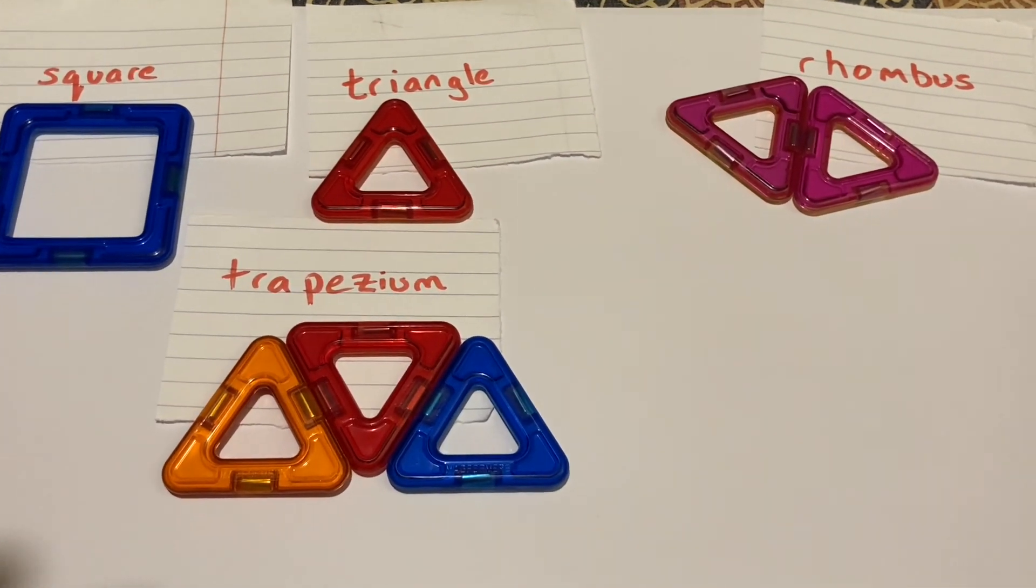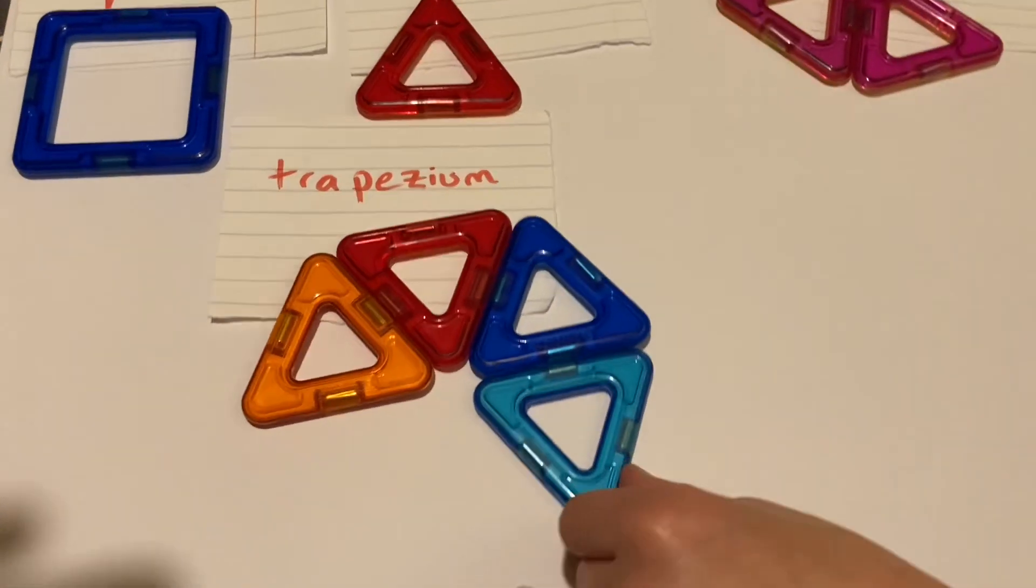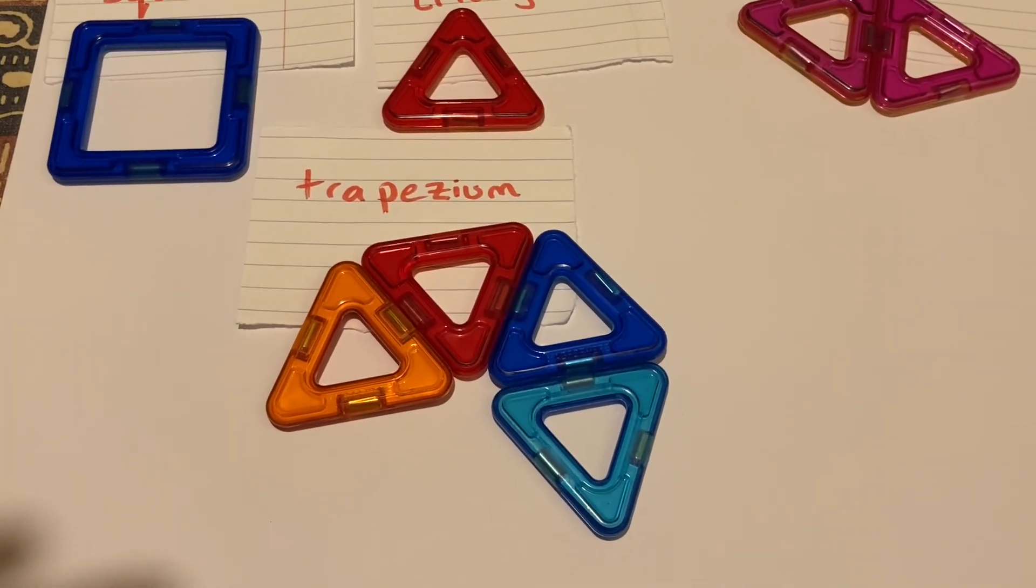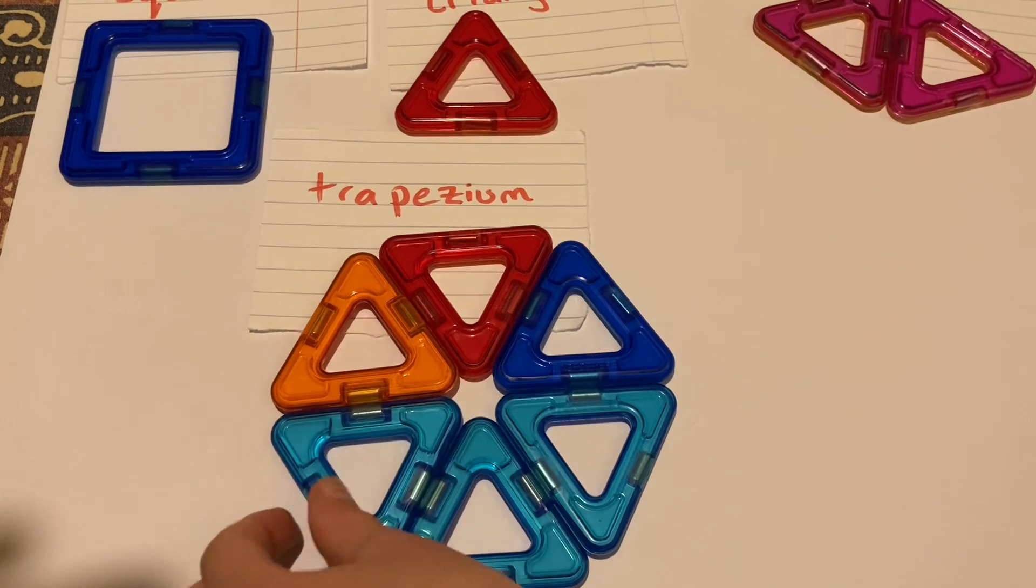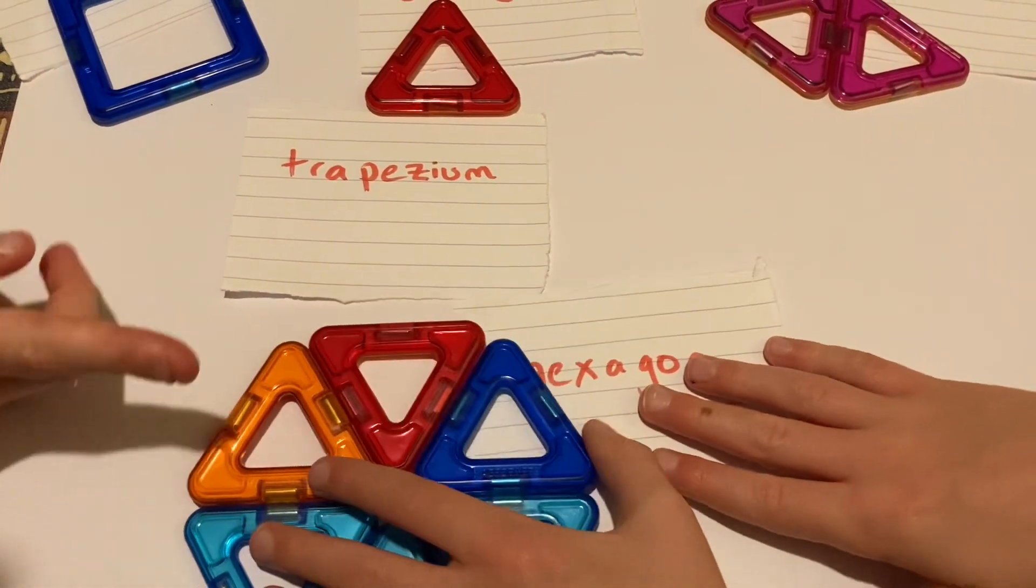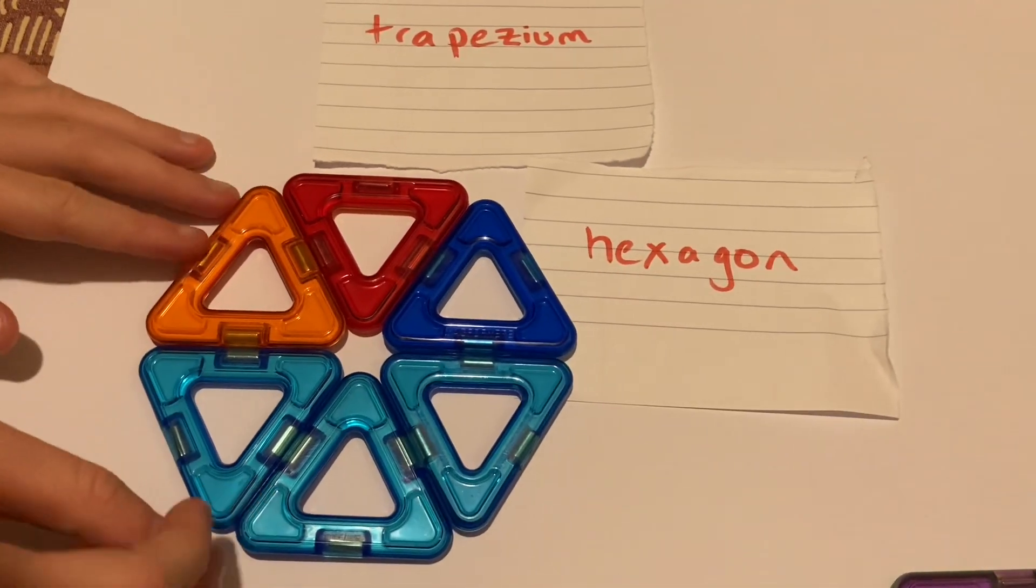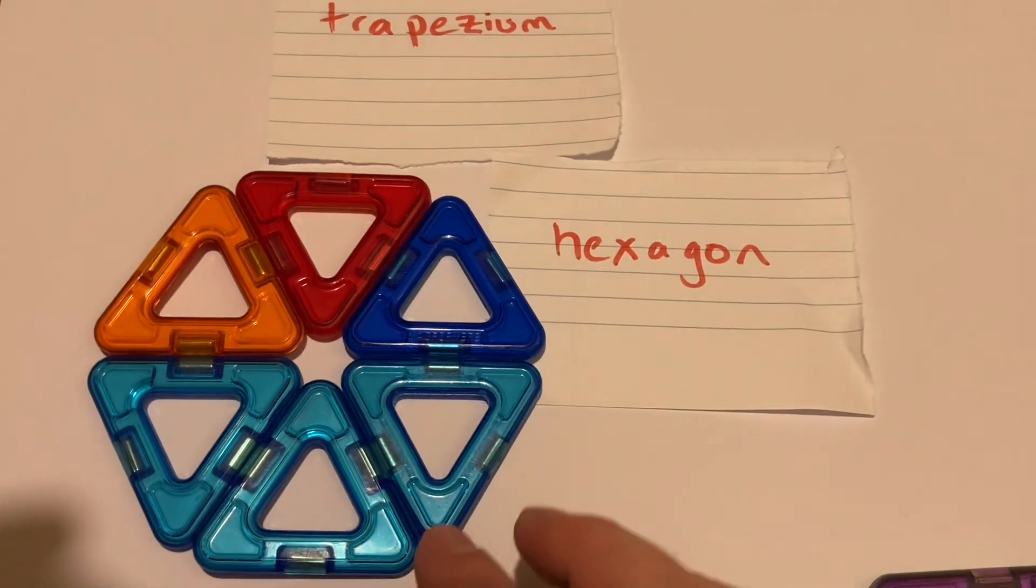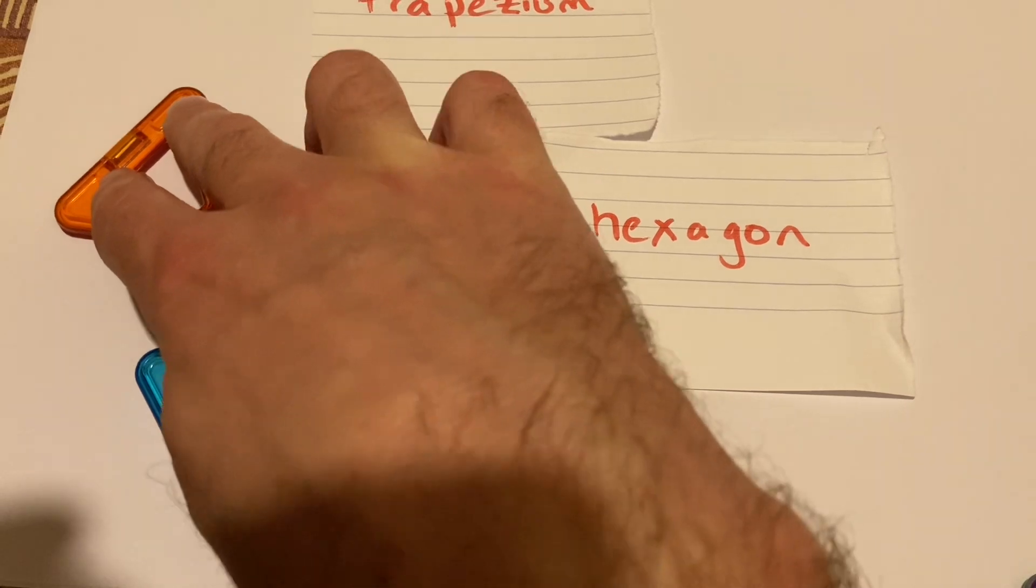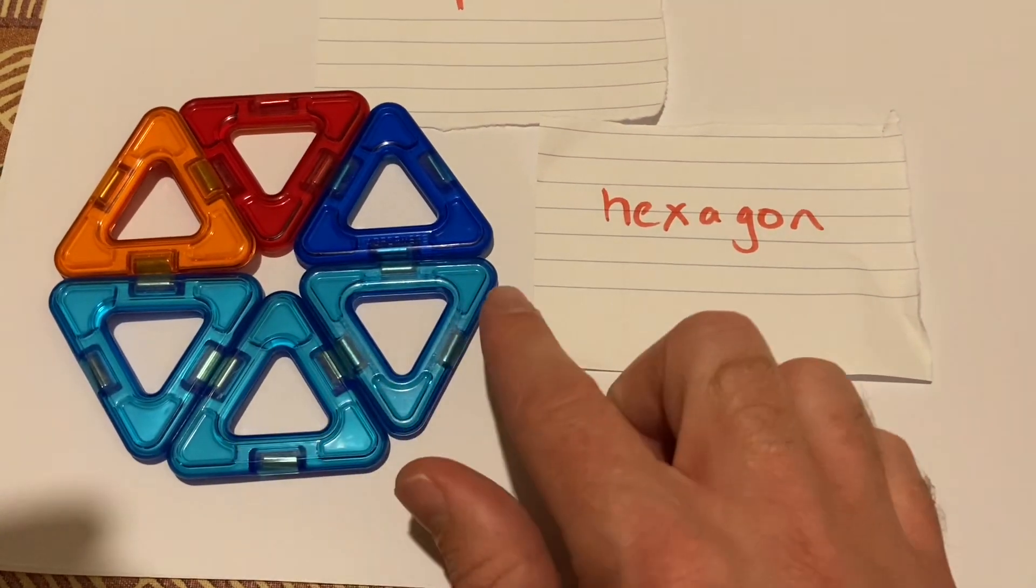If we were to add another trapezium to the bottom of it, keep adding those triangles. Fill those gaps. What shape are we getting there? That could be a hexagon with six sides and six vertices. So that's your beehive shape. You can see these equilateral triangles can make a rhombus, can make a trapezium, and can make a hexagon.